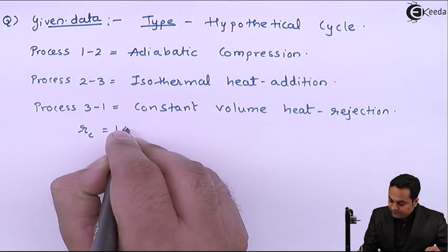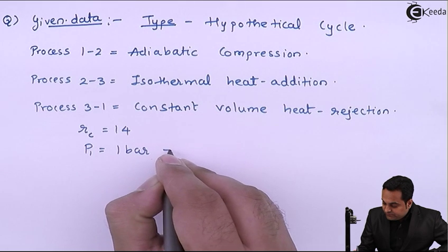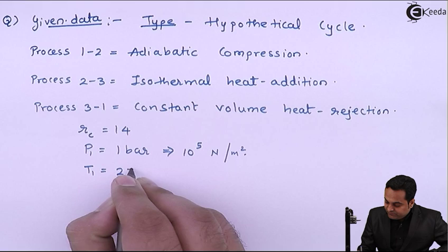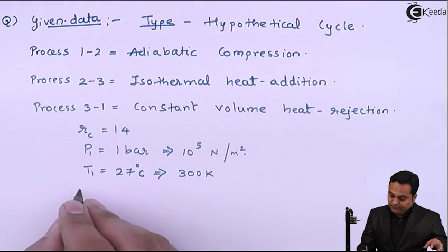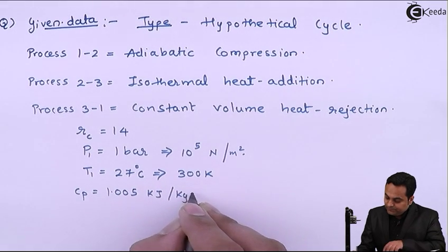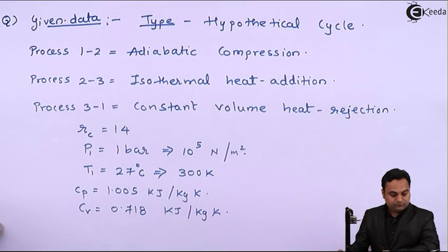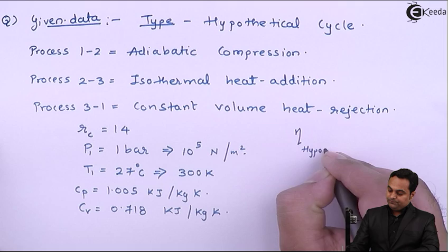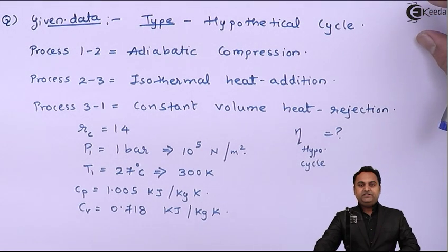The given data: compression ratio r_c = 14; intake pressure P1 = 1 bar = 10^5 N/m²; intake temperature T1 = 27°C = 300 K. For air: Cp = 1.005 kJ/kg·K and Cv = 0.718 kJ/kg·K. We need to find the efficiency of this hypothetical cycle using this data.